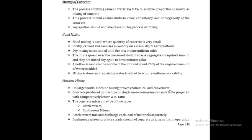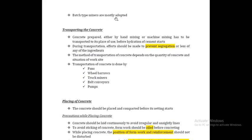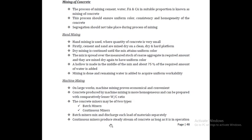Concrete produced by machine mixing is more homogeneous and can be prepared with comparatively lesser water-cement ratio. The concrete mixture is of two types: batch mixture and continuous mixture. In the batch type, each batch is discharged and loaded. In the continuous mixture, a steady stream of concrete is produced as long as it is in operation. The batch type mixture is mostly adopted.